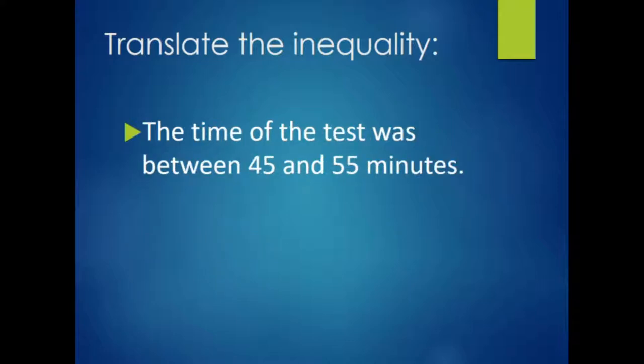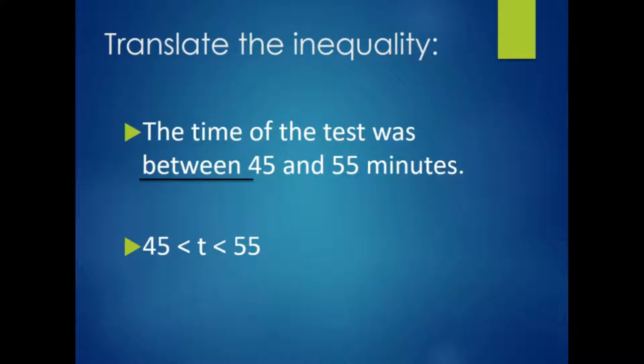The time of the test was between 45 and 55 minutes. The key word for the inequality is 'between.' To represent this information, we have the following compound inequality: T is greater than 45 and less than 55.